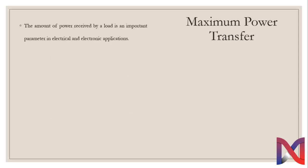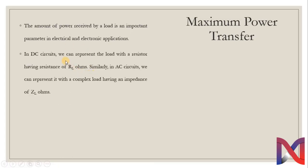The amount of power received by a load is an important parameter in electrical and electronic applications. In DC circuits, we can represent the load with a resistor having a resistance of R_L ohms. Similarly, in AC circuits, we represent it with complex loads having impedance of Z_L ohms.